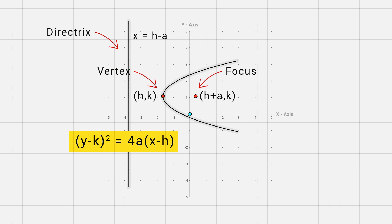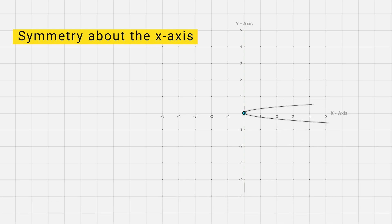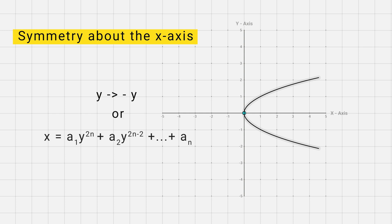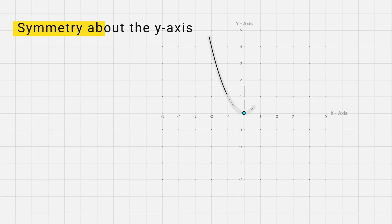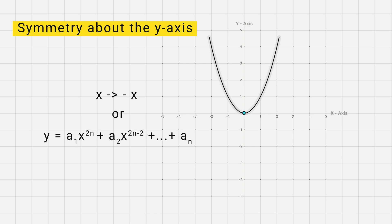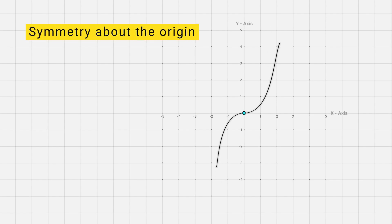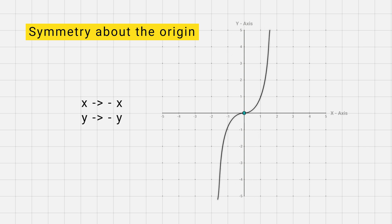At the end of this video we will discuss the general process of tracing a conic. The curve is symmetrical about the x-axis if the equation remains unchanged on replacing y by minus y, or if the equation contains only even powers of y — for example, y squared equal to 4x. The curve is symmetrical about the y-axis if the equation remains unchanged on replacing x with minus x, or if it contains only even powers of x — for example, x squared equal to 4ay. The curve is symmetrical in opposite quadrants if the equation remains unchanged when both x and y are replaced with minus x and minus y — for example, y equal to x cubed.